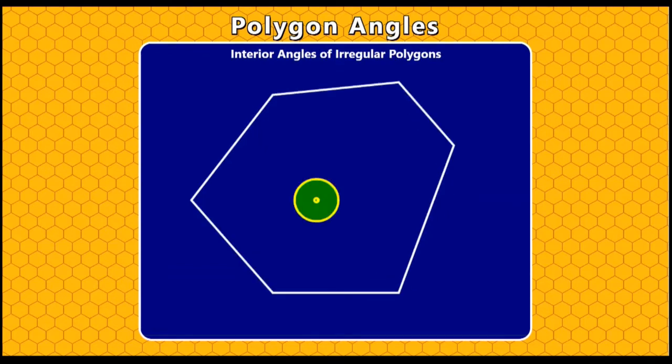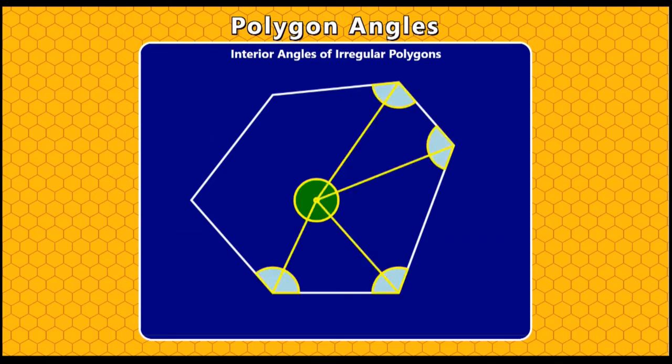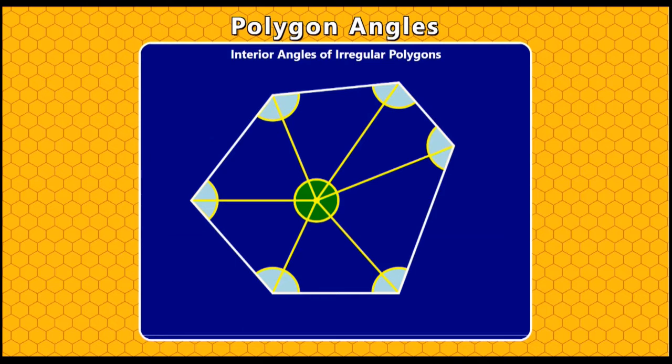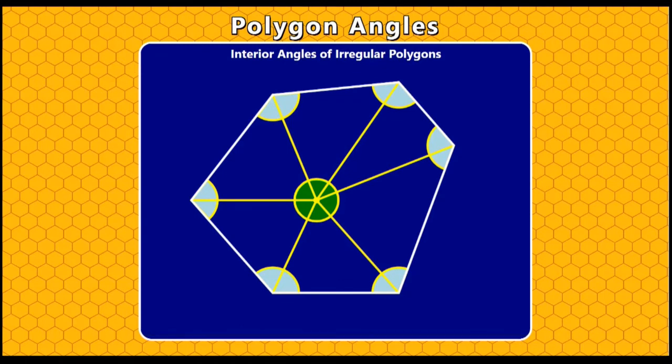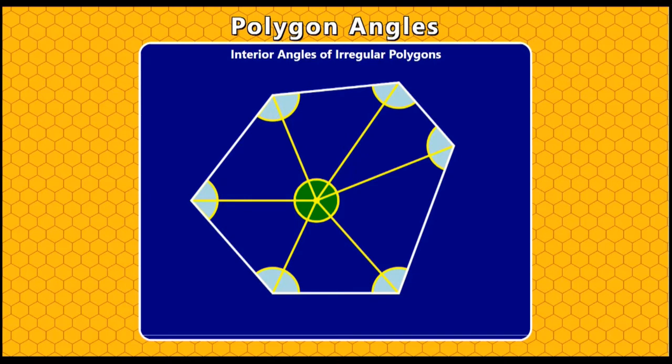Now if you have an irregular hexagon, all the sides and the angles are different in this case. If you join any point inside it to all of the vertices, you split up that hexagon into six triangles. Now we know that the angles inside a triangle add up to 180 degrees, and here we've got six triangles. So all the angles must be six multiplied by 180. But those green angles, the angles of the triangle that meet at that point that we started from, we don't want to include those. Because they fit together around a point, they must total 360 degrees.